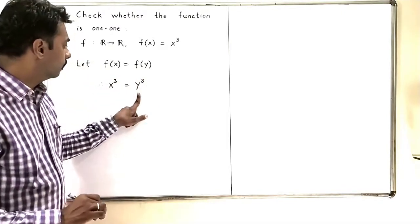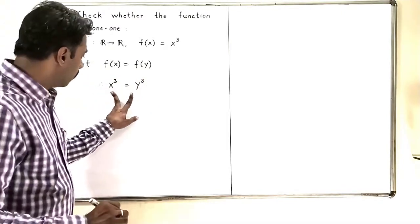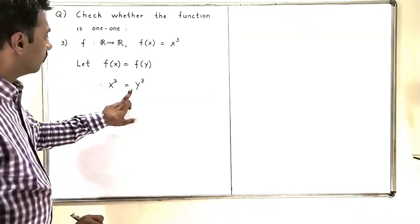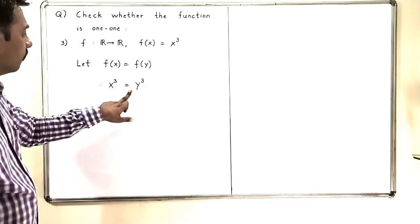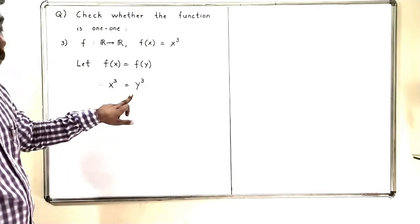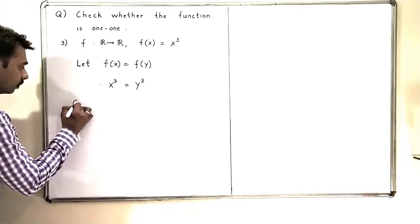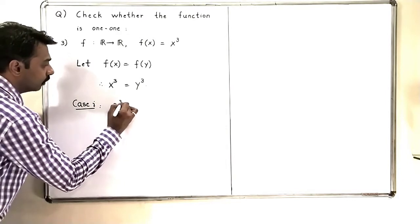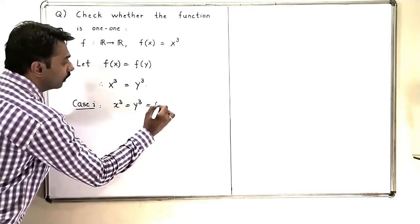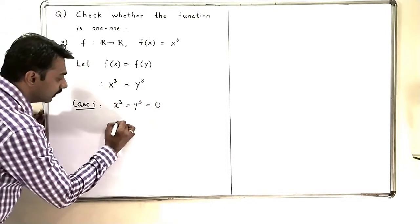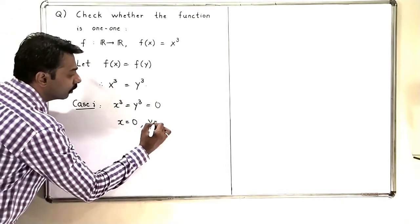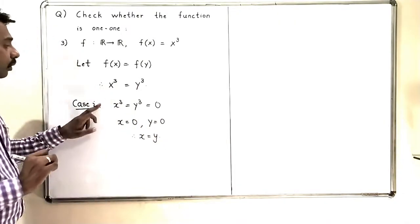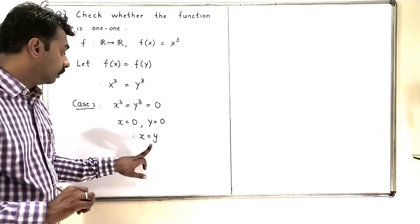Now, if x³ = y³, I have to show that x = y. I will look at three cases. Case 1: if x³ = y³ = 0, then obviously x = 0 and y = 0, and therefore x = y. So in this case, x = y.